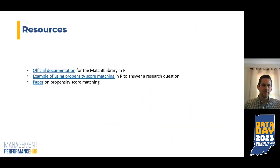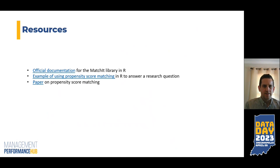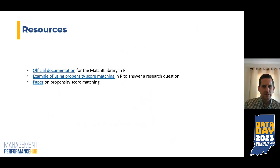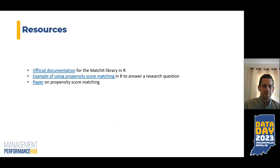I have a couple of resources here if you want to access the PowerPoint presentation — there's a link to the official documentation for the MatchIt library, which can do a lot of other things as well. There's also an example of using propensity score matching in R to answer a research question similar to this, and finally a link to a more academic journal article on the logic and math of propensity score matching.